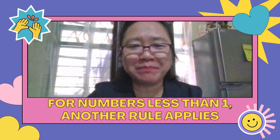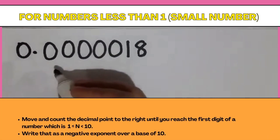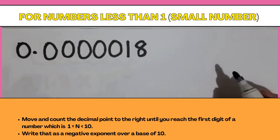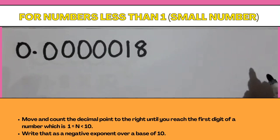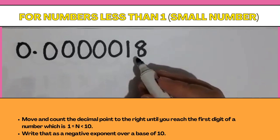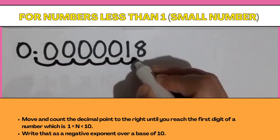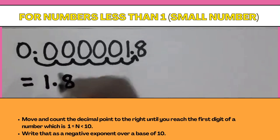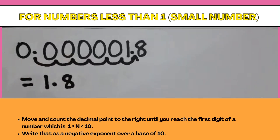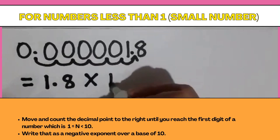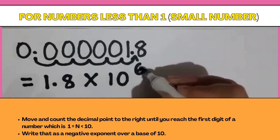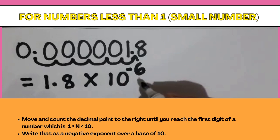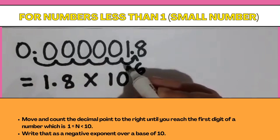For numbers less than 1, another rule applies. For example, 0.000018. Move and count the decimal point to the right until you reach the first digit greater than or equal to 1 but less than 10 — it's here. Count: 1, 2, 3, 4, 5, 6. Place the decimal point there. Expressing the number in scientific notation, we have 1.8 × 10⁻⁶, dropping the zeros because they are not significant. The exponent is negative because the decimal point moved to the right.